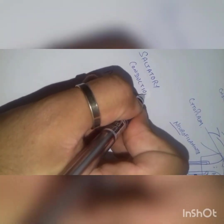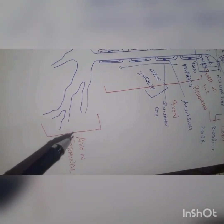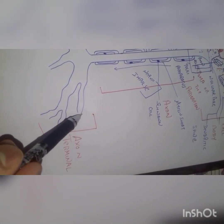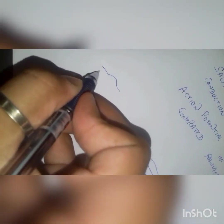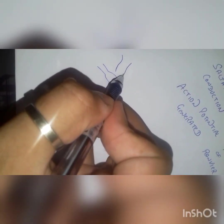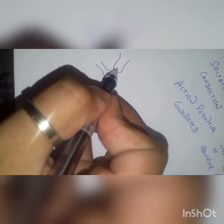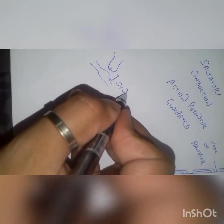The saltatory conduction helps in quick transfer of the nerve impulse and also saves a lot of energy. The final part of the neuron is called the axon terminal, which consists of small portions called synaptic knobs. The dendritic spine comes in contact with the end of the axon, neurotransmitter release takes place, and information transfers from one neuron to another — this is called the synapse.